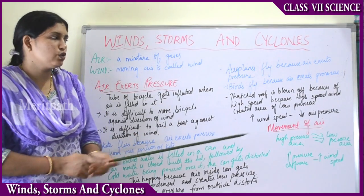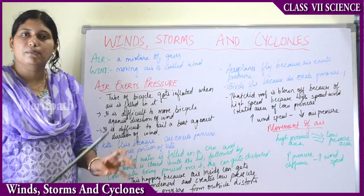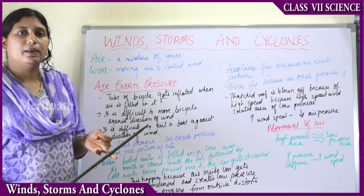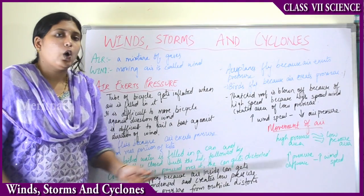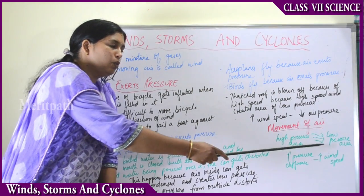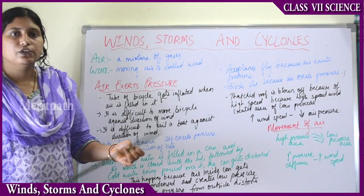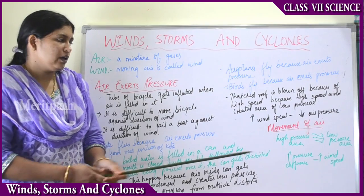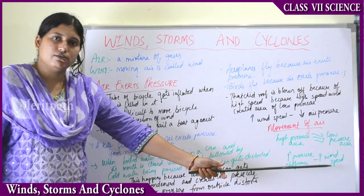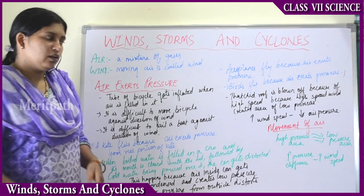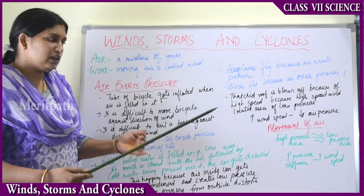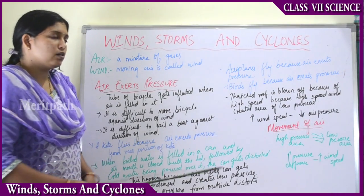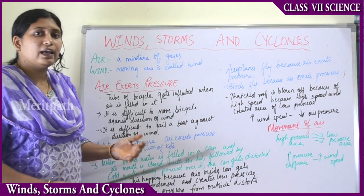Increased wind speed always leads to decreased air pressure — remember: increase in wind speed leads to low pressure. The movement of air is always from a high pressure area to a low pressure area. An increase in the pressure difference leads to an increase in wind speed, and vice versa — that is how the movement of air occurs.